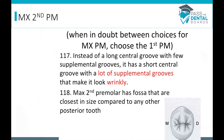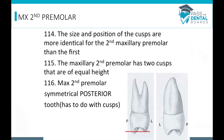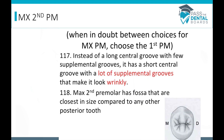There are only five different points to learn about the second premolar — three have to do with cusp height, and two with the occlusal surface. When in doubt between a maxillary first or second premolar, always go for the first premolar, as there's more content testable on it. Instead of a long central groove with a few supplemental grooves, the second premolar has a short central groove with lots of supplemental grooves that make it look wrinkly. The maxillary second premolar also has fossae closest in size compared to any other posterior tooth.